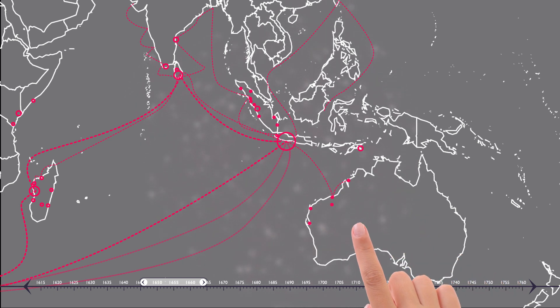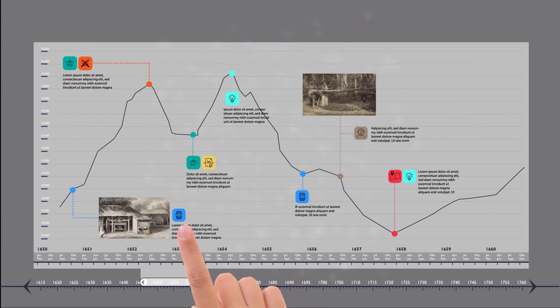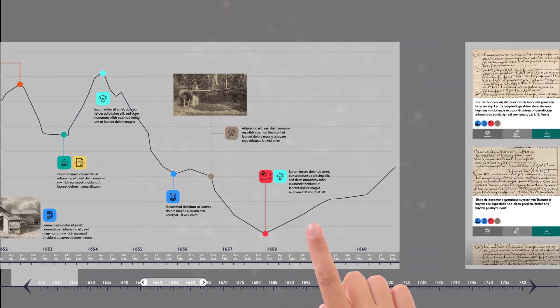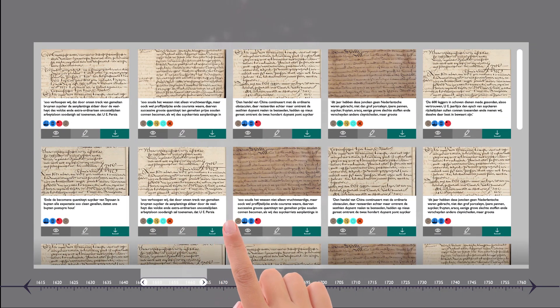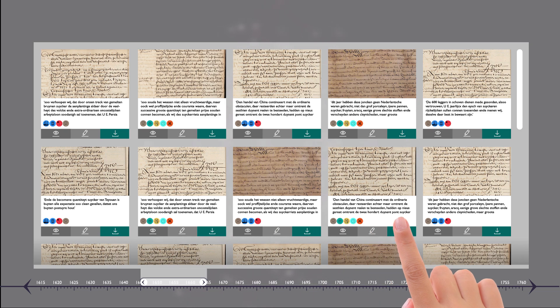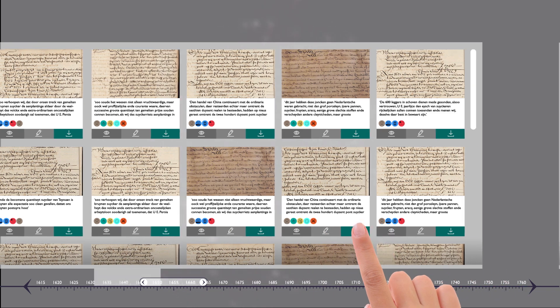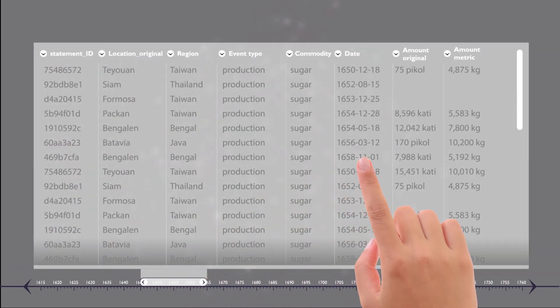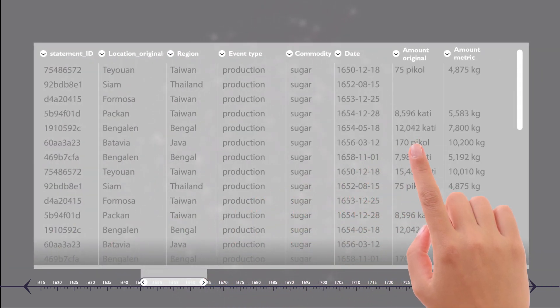Results can also be explored on a timeline, combining quantitative and qualitative evidence, in a grid view with text snippets and original source documents, and in tabular form showing downloadable structured data.